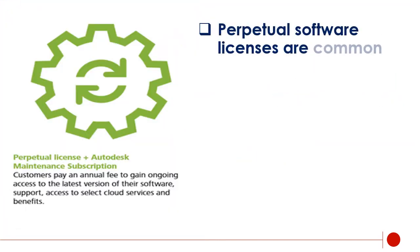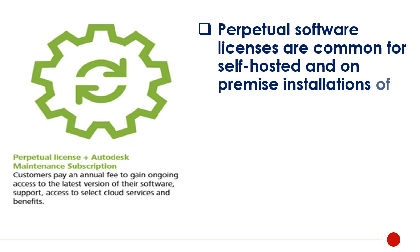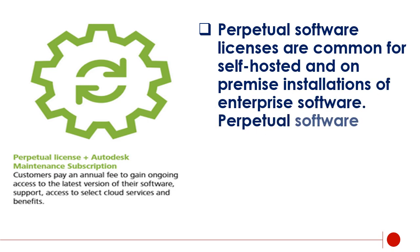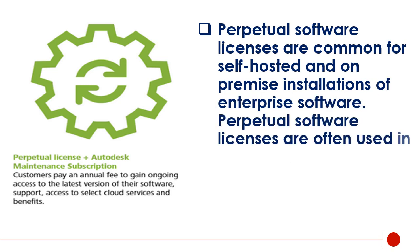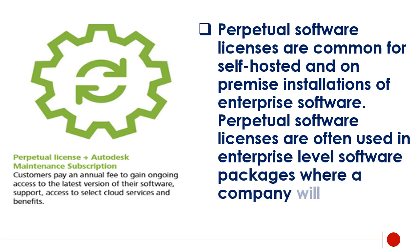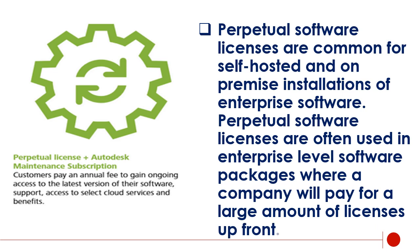Perpetual software licenses are common for self-hosted and on-premise installations of enterprise software. They are often used in enterprise-level software packages where a company pays for a large number of licenses up front. This is generally the most expensive licensing model up front, but tends to be a cost-value investment for large organizations who need multiple licenses.